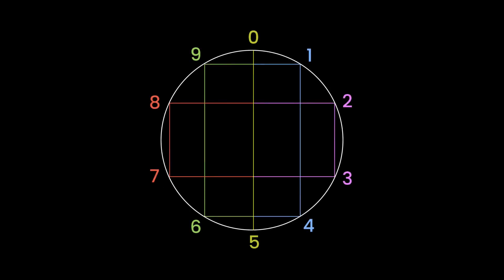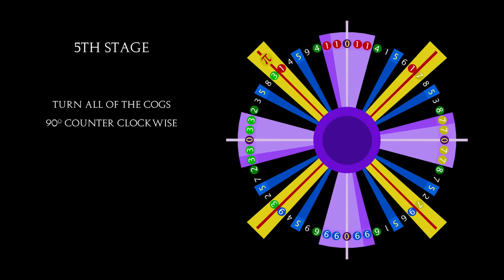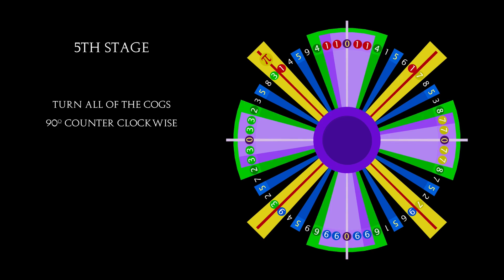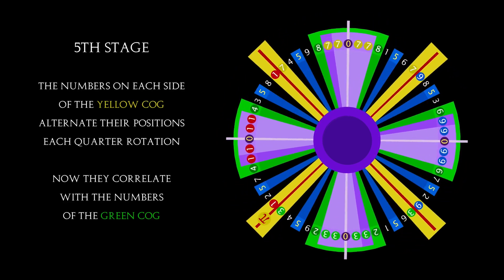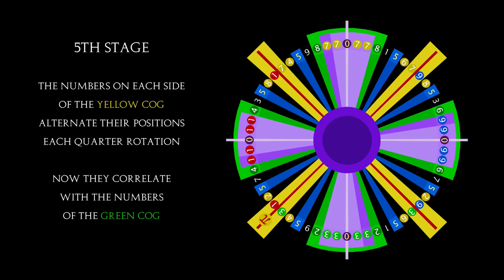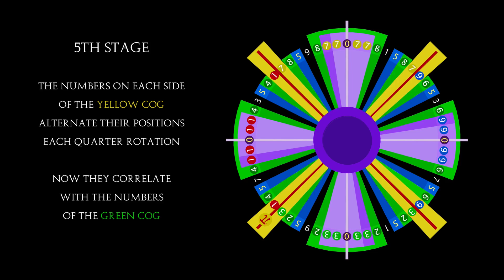The relationship between the numbers can be seen clearly when drawn around a 10-digit color-coded circle. Now add a new cog to the mechanism, and turn all of them 90 degrees counter-clockwise. At this point, it appears that the numbers that surround the yellow arm alternate, changing position each time the yellow arm crosses over. So now they coincide with the 4s, the 8s, the 6s and the 2s of the green arm.